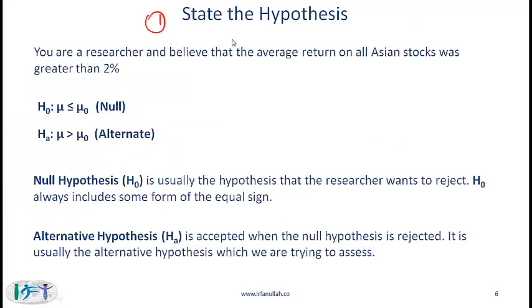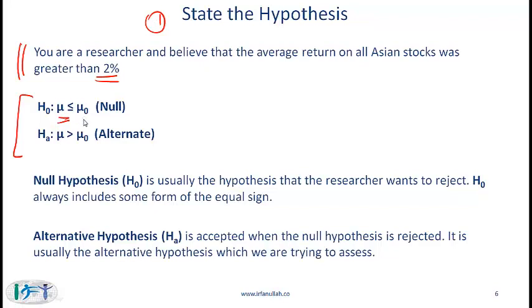Let's start with the first step: stating the hypothesis. Going back to our original assertion — you are a researcher and believe that the average return on all Asian stocks was greater than 2%. Here is how we express this in formal terms. There is something called a null hypothesis, written as H0, and this is the hypothesis that we typically want to reject. Mu stands for the population mean and mu0 for the hypothesized value.